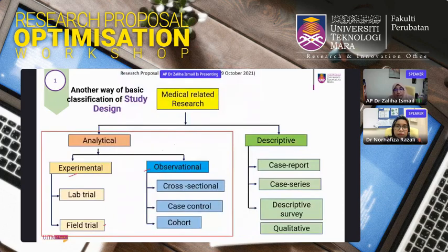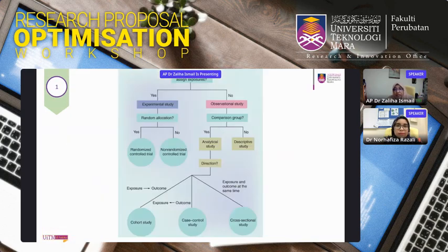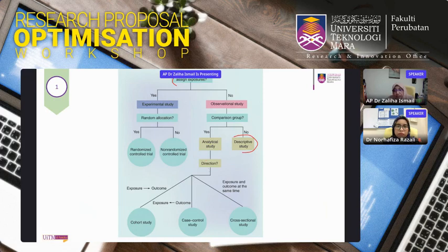To determine study design: did the investigator assign the exposure? If yes, it's experimental; if no, it's observational. For experimental studies, if random allocation is used, it's a randomized controlled trial; if not, it's a non-randomized trial. For observational studies, if there is no comparison group, it's descriptive. If there is a comparison group, the direction of the study — from exposure to outcome — determines whether it's cohort, case-control, or cross-sectional.